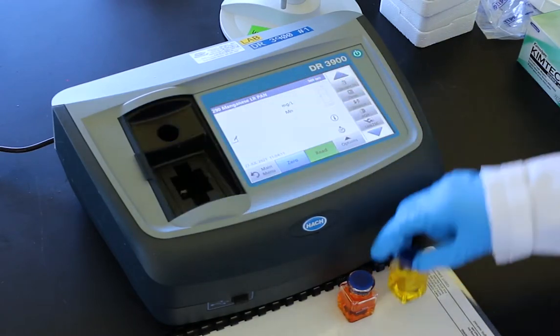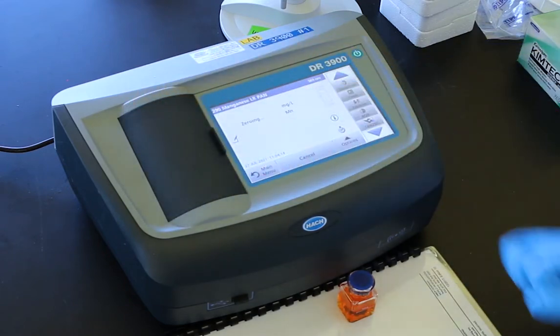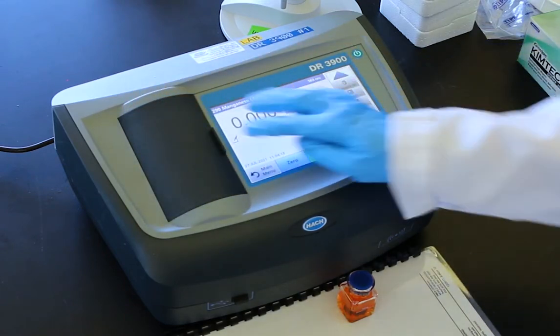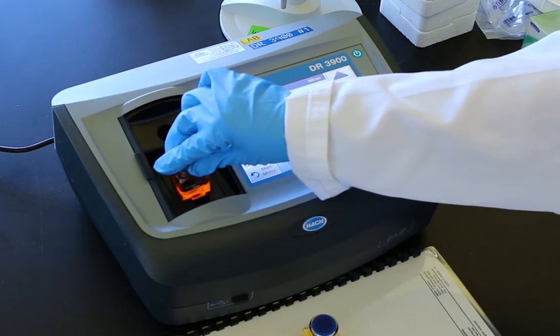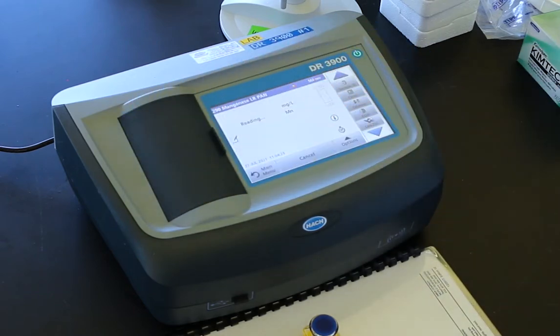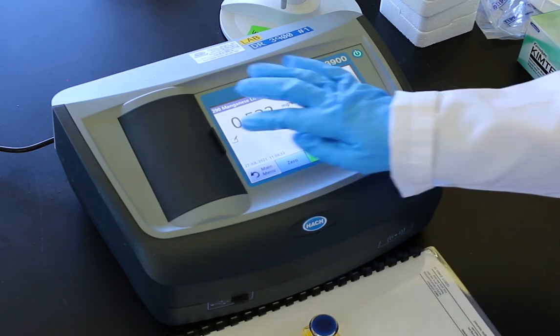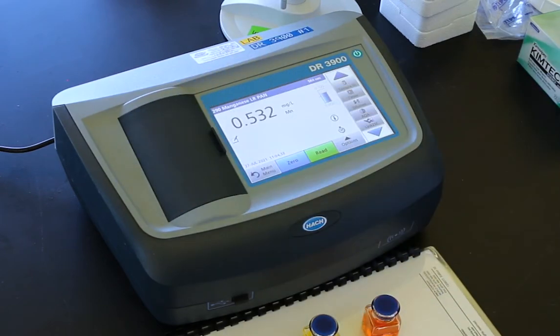Zero the instrument. Remove the blank and insert the sample cell. Press read. Record the sample result in milligrams per liter of manganese.